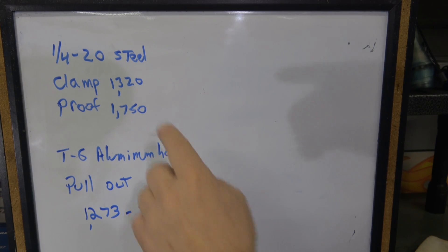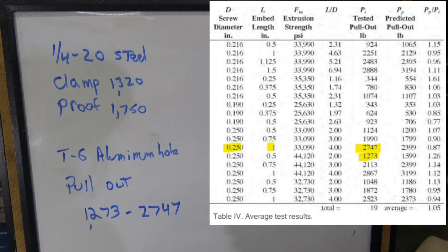But then you say, well the steel is actually in an aluminum manifold so the aluminum is weaker than the steel. And we can see by this chart that a T6 aluminum threaded hole, a quarter inch hole, roughly about the same size, has a range of pull out force of 1,273 to 2,747.